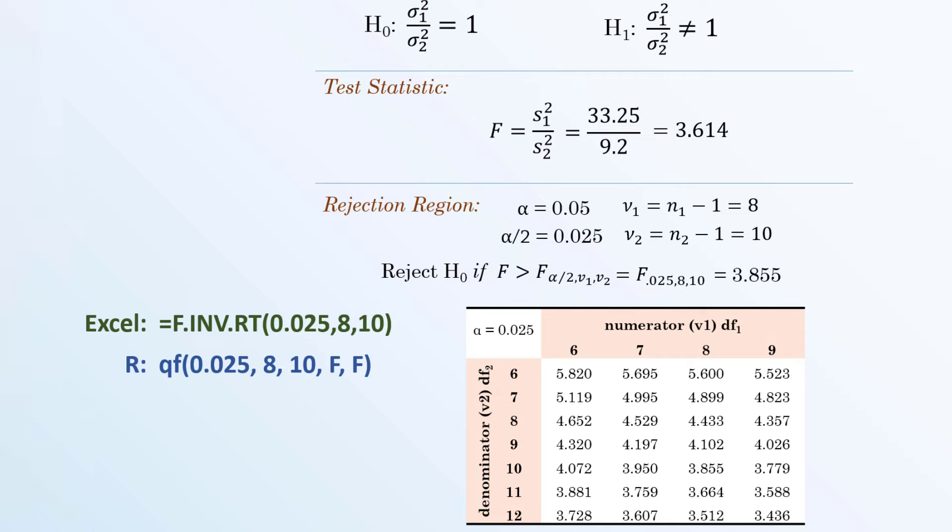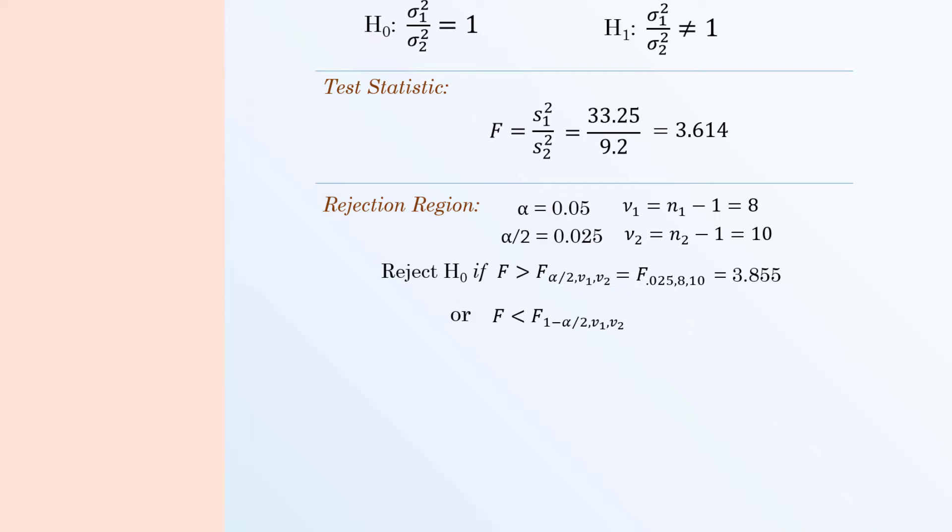Nonetheless, the left-tailed critical value can be found by replacing alpha over 2 by 1 minus alpha over 2. But you won't find 0.975 in most F-tables. So, if you must read from tables,